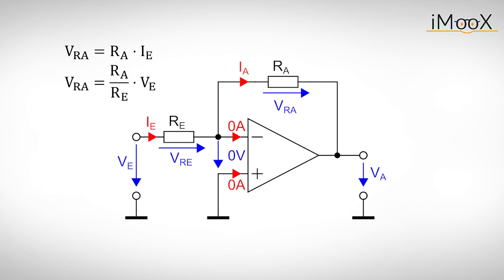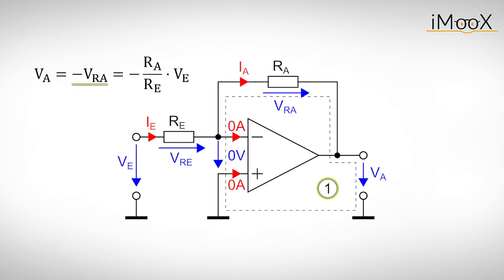Substituting the current Ie gives Vra as a function of the input voltage. By solving loop 1 we obtain the output voltage as minus Vra and get the output voltage to input voltage relation. This means the amplifier has a gain of G equals minus Ra over Re.